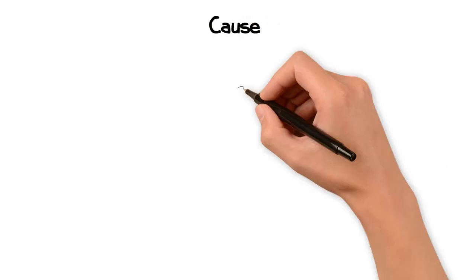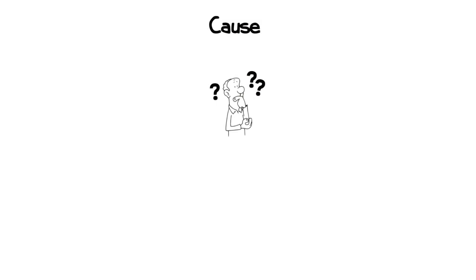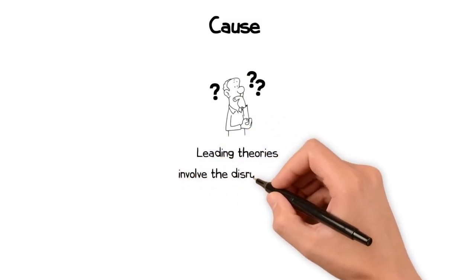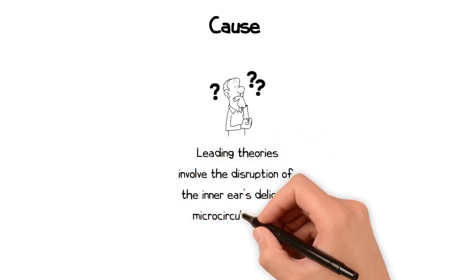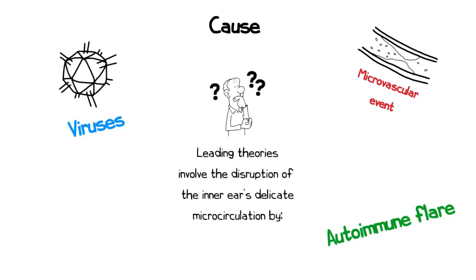The exact cause is unclear, but there are a number of theories that have been proposed. The inner ear is metabolically very fragile, and disruptions in the ear's microcirculation, either due to a virus, a microvascular event, or an autoimmune flare, can all result in sensory loss.